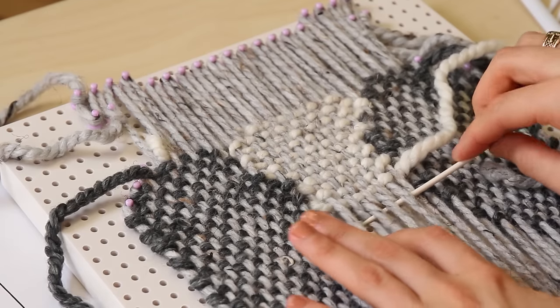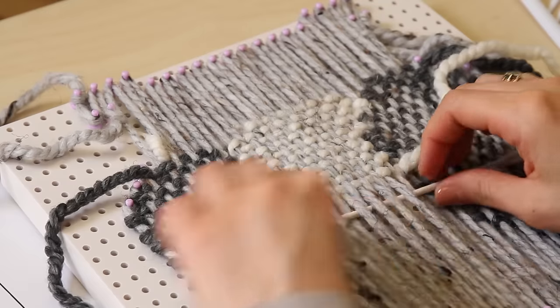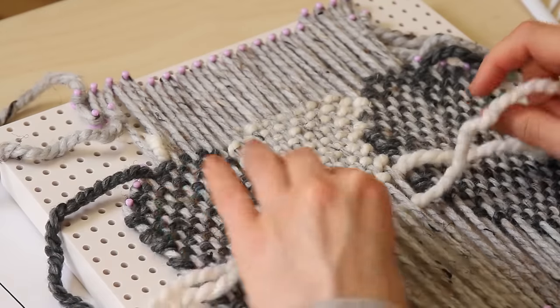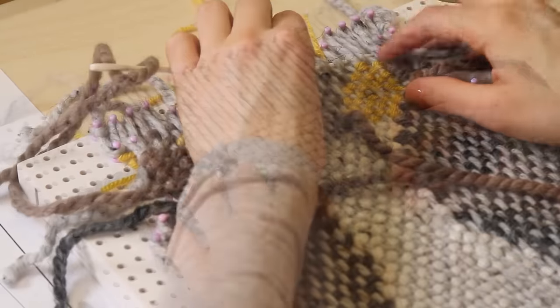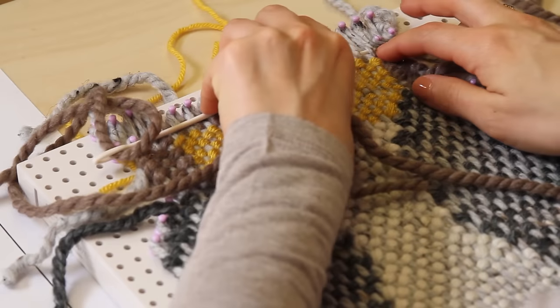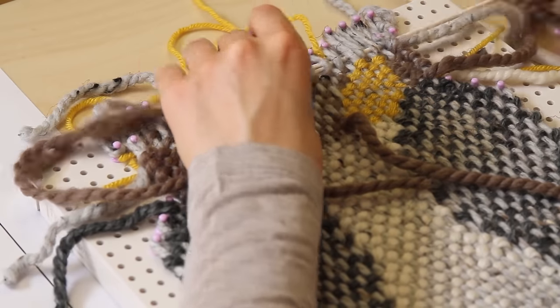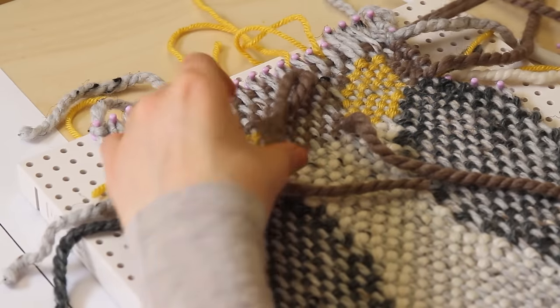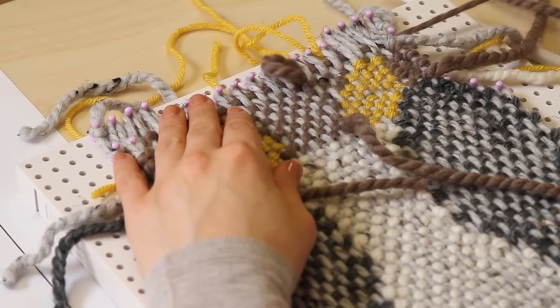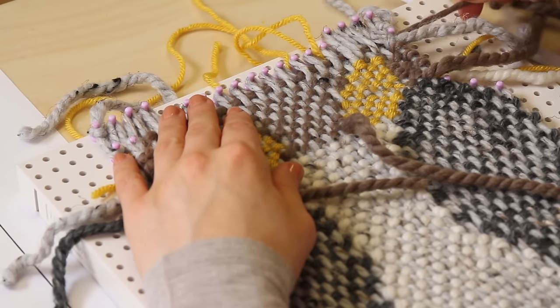Continue in basic weaving as you finish the bottom portion of the owl mat. I followed the owl chart to weave the face and eyes working in tapestry weaving. Now I will continue with Woolies Thick and Quick in taupe to finish weaving the remainder of my warp.